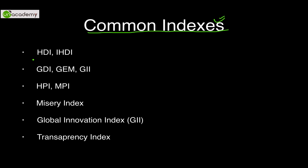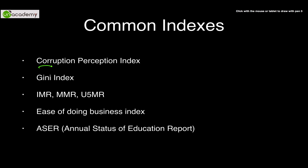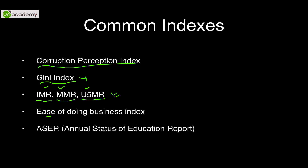The common indexes include: Human Development Index, Inequality Adjusted Human Development Index, Gender Related Development Index, Gender Empowerment Measure, Gender Inequality Index, Human Poverty Index (discontinued a few years ago), Multi-dimensional Poverty Index, Misery Index, Global Innovation Index, Transparency Index, Corruption Perception Index, Gini Index (related to inequalities), IMR, MMR, Under-5 Mortality Rate, Ease of Doing Business Index, and ASER — the Annual Status of Education Report published by Pratham, an NGO.